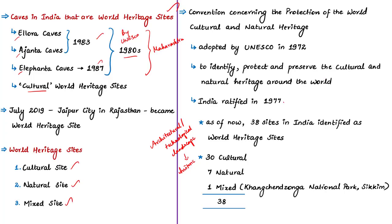India ratified this convention in 1977 and is a state party to it. India is expected to protect the heritage values of listed properties and report periodically to UNESCO about their protection and condition. As of now, there are 38 sites from India declared as World Heritage Sites: 30 are listed under the cultural category, 7 as natural heritage sites, and 1 as a mixed heritage site. That one mixed site is Kanchenjunga National Park in Sikkim. The latest addition from India is the city of Jaipur.